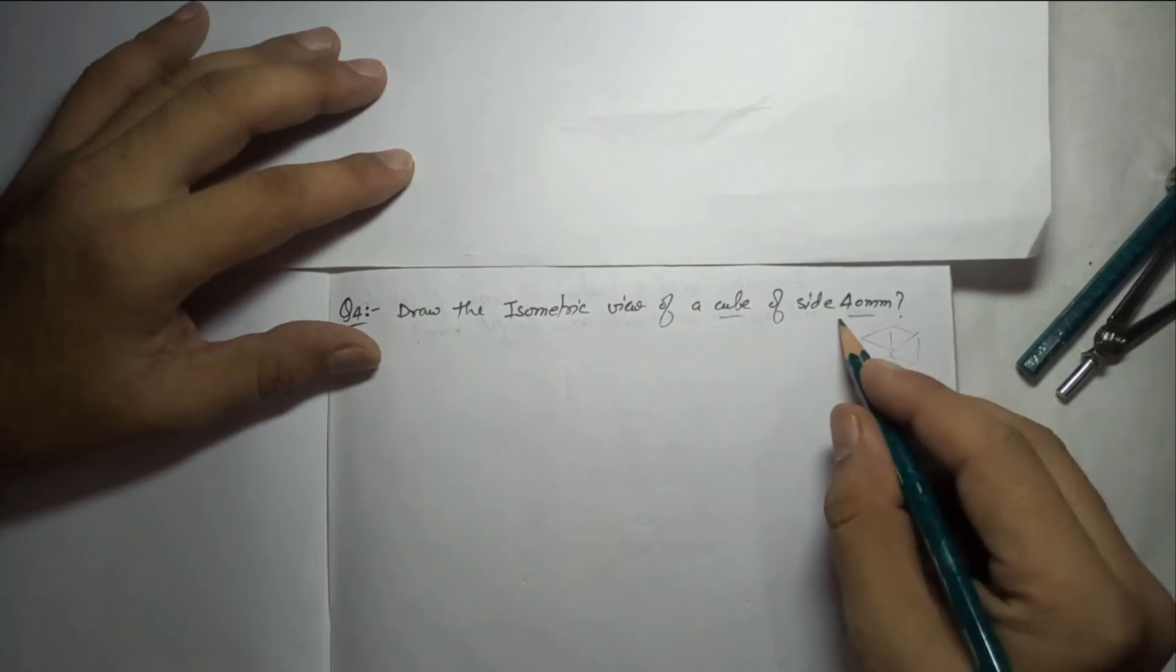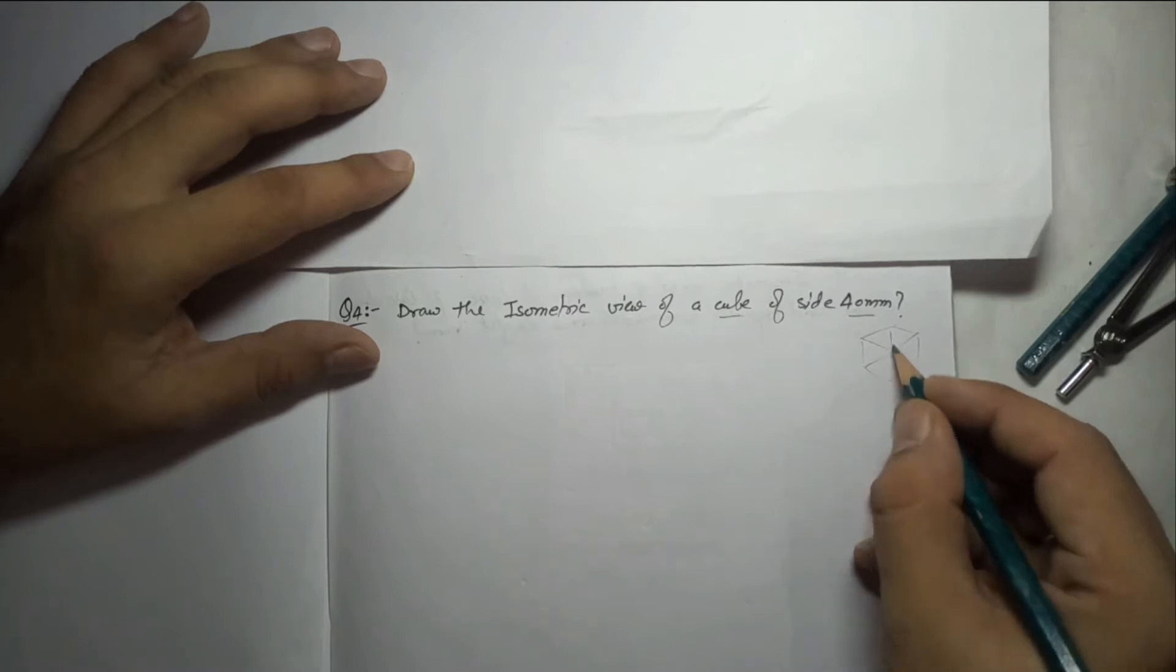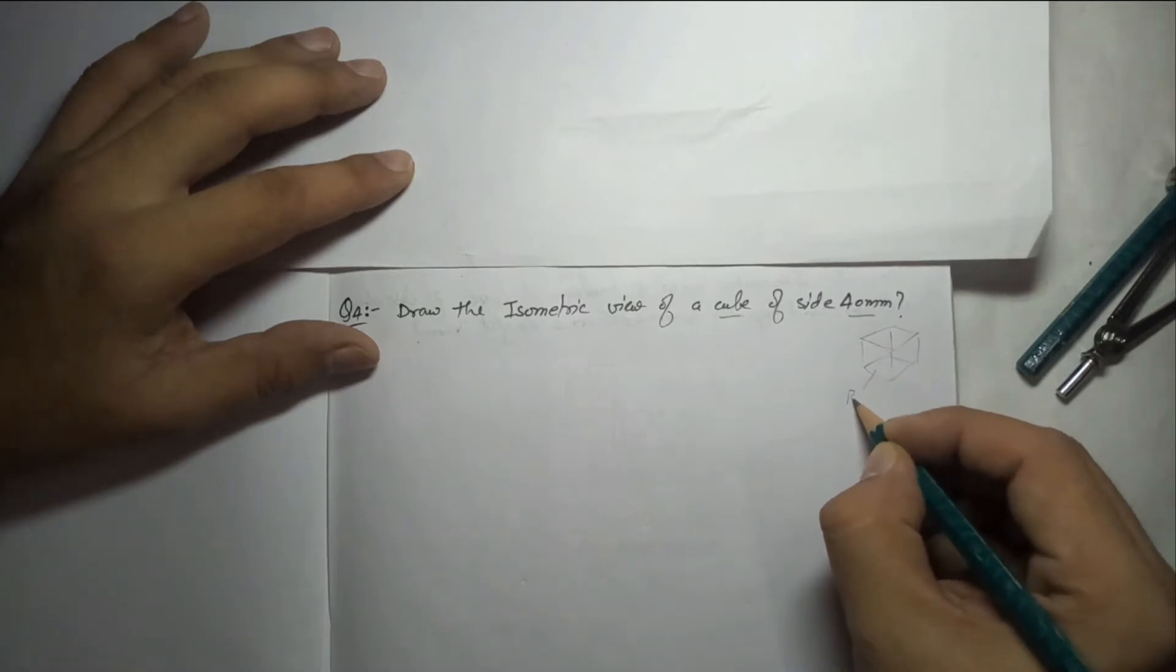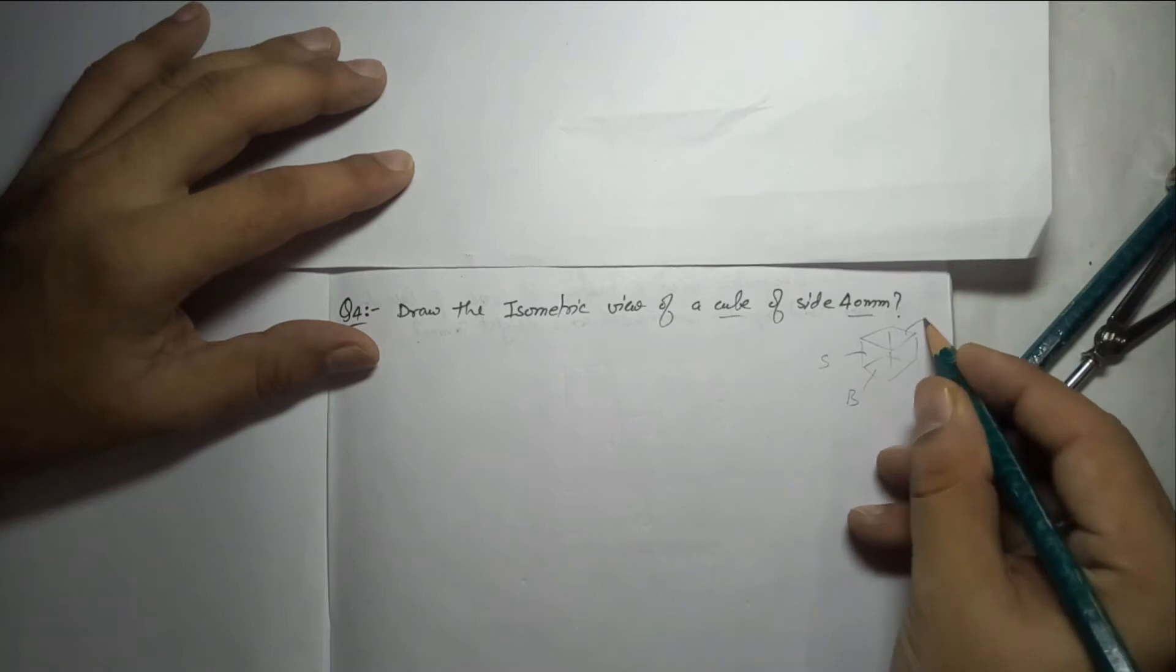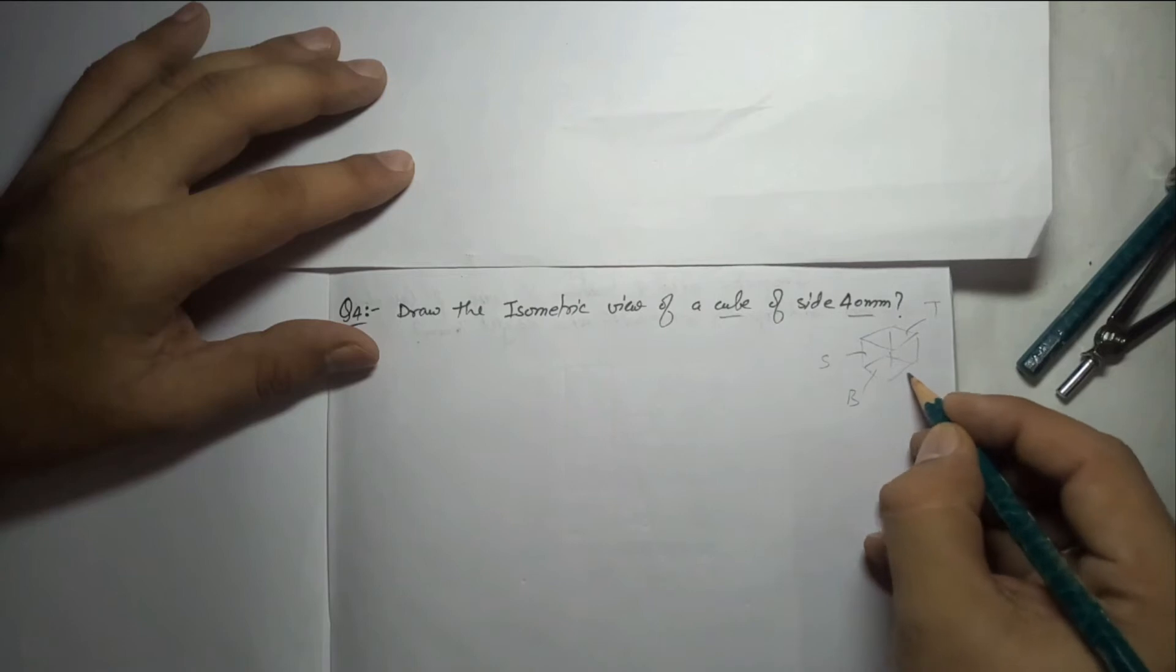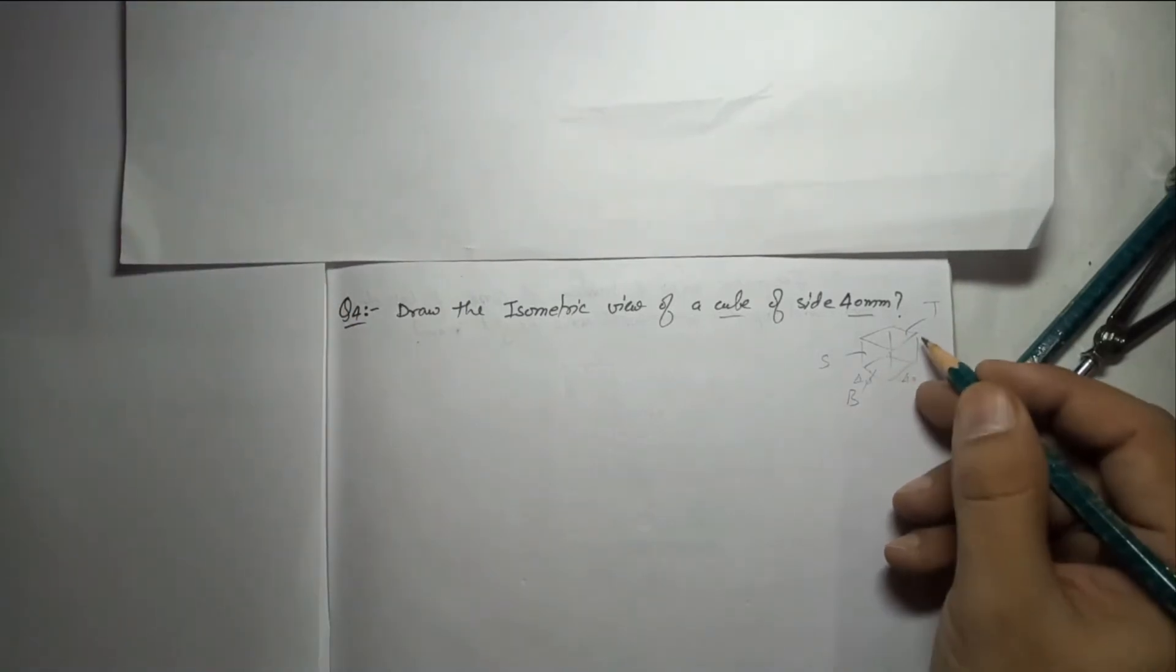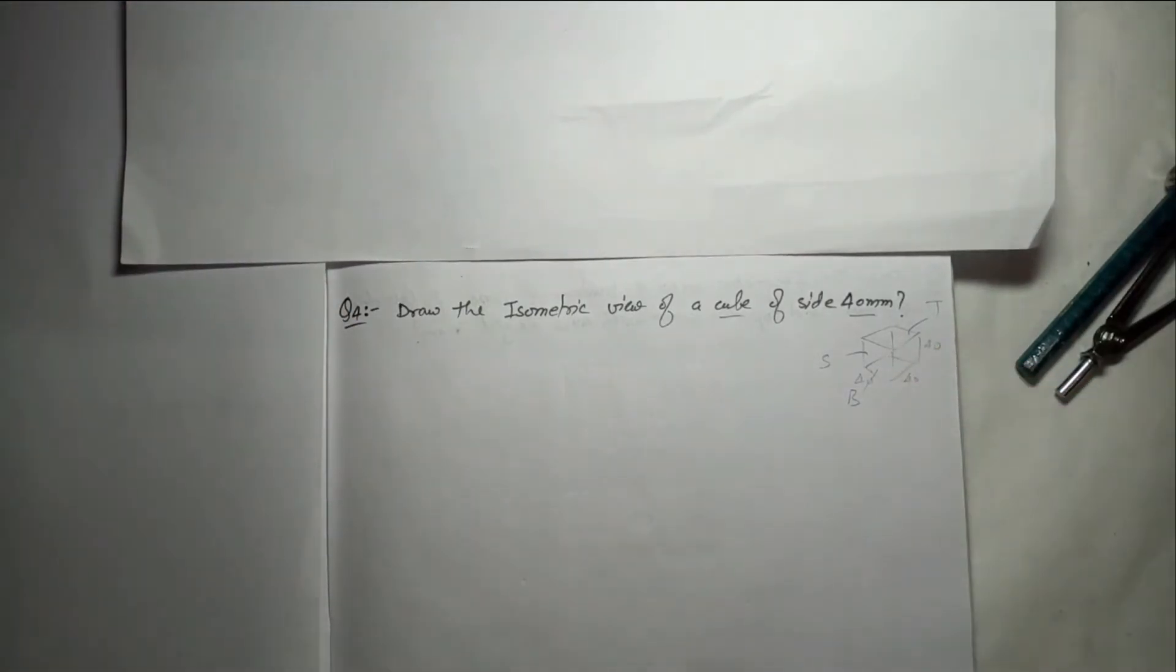This cube has side 40, meaning all sides will be 40. If I divide the cube into three parts, it will have base, surface, and top. The base of the cube is a square. We know how to draw the square: it will be side 40 by 40, height is also 40, and the top is again a square.